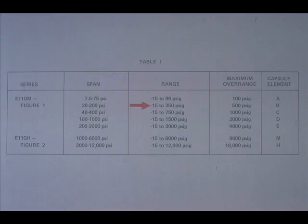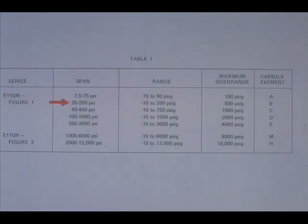The range limits are minus 15 to 350 PSIG. This is within our 100 to 200 PSIG range. Look at the span limits for capsule B. They are from 20 to 200 PSIG. This is within our required span of 100 PSIG. Capsule B will be suitable.